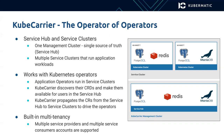Kube-Carrier has a discovery mechanism to discover CRDs of those operators and make them available for users in the centralized service hub. Kube-Carrier also propagates the custom resources from the centralized service hub to service clusters to drive the operators to create application workloads and service instances. Additionally, Kube-Carrier has multi-tenancy support, meaning it supports multiple service providers and multiple service consumers in a single installation.